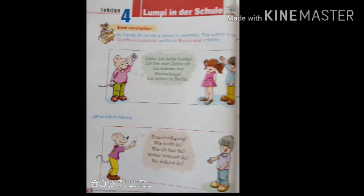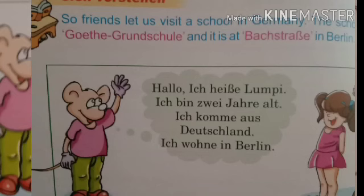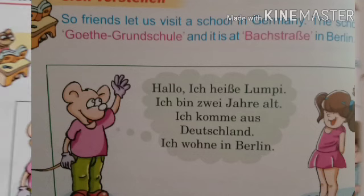Good morning everyone. Today we are going to start lesson number four. The name of the lesson is 'Lumpi in der Schule.' Lumpi is the noun, 'in der Schule' means 'in the school.' The first word is 'Vorstellung' — as you know, 'wir' in German is pronounced 'fao' — so 'Vorstellung' means 'to introduce.'